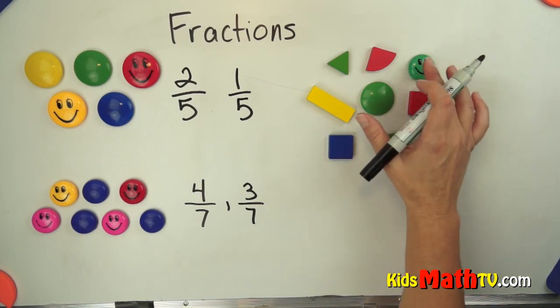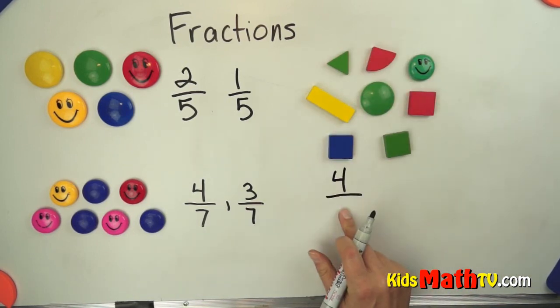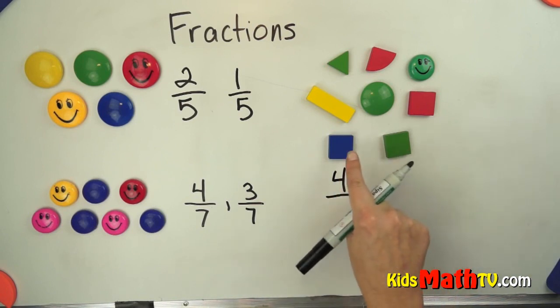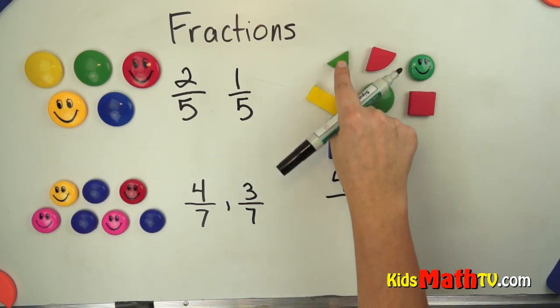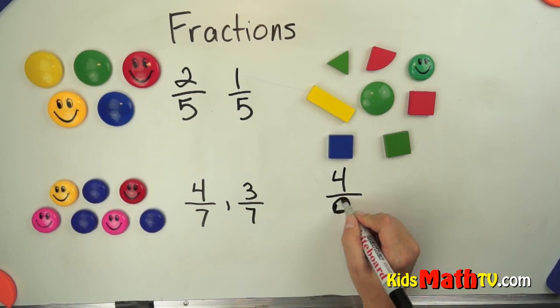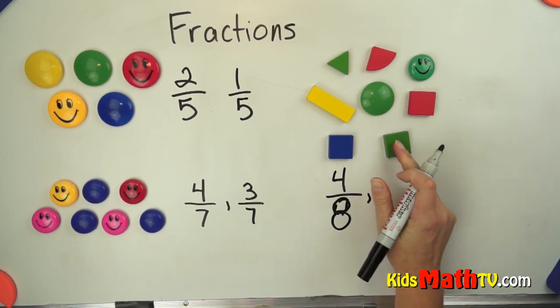Well, I see one, two, three, four parts that are green, but I have to know the total. So I have to count up all of the pieces. One, two, three, four, five, six, seven, eight. Four out of eight are green.